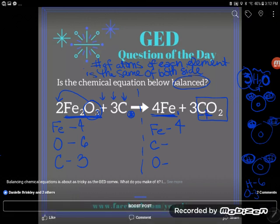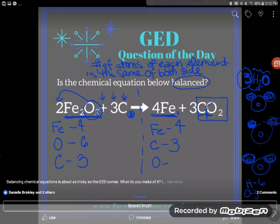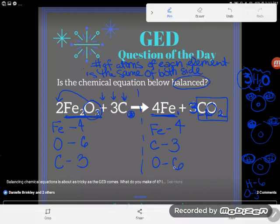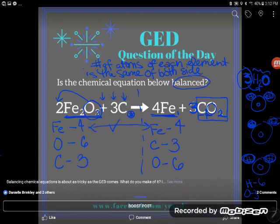And oxygen, I do have a subscript of two, but I have those two atoms of oxygen happening three times, so I'll end up with six oxygen. So let's take a look. For iron, four iron, that's balanced. Six oxygen, six oxygen, that's balanced. Three carbon, three carbon, that's balanced.